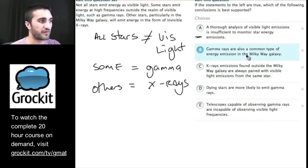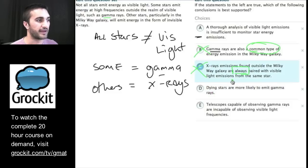Gamma rays are also a common type of energy emission in the Milky Way galaxy. Well, I remember gamma rays being mentioned. I wrote it here. It's also written here. But they don't talk about it being a common type. And so I can't point to that. I'm going to get rid of it. C. X-ray emissions found outside the Milky Way galaxy are always paired. So here's an extreme word, always. And it's not supported. I can get rid of C. I can't point to where this extreme word is supported. This is why I like inference questions, especially when they have extreme words in the answer choices. I can eliminate them pretty readily if I can't point to them.